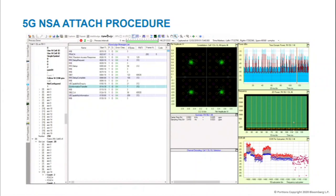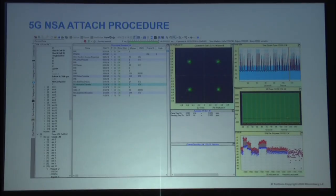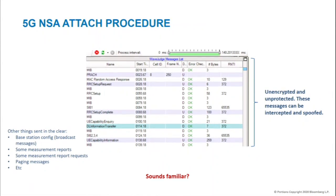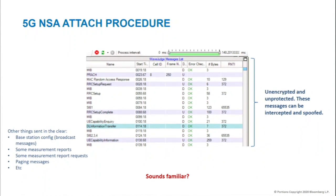Now let's start looking at actual traffic. This is a capture of the message flow a device has with a real 5G base station to attach to the network. As I mentioned earlier, all these messages are unencrypted, unprotected — they can be intercepted, sniffed, and abused in different ways. There are other things that also have the same issue on 5G. Does this sound familiar? Hopefully yes — when I looked at this, it sounds very familiar to the LTE captures I showed earlier. The protocol is very similar. The same messages are unprotected.